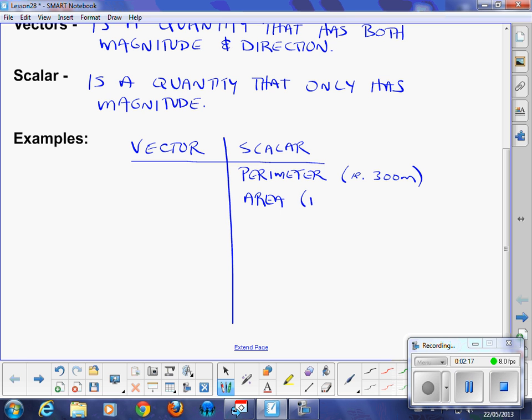You already have worked with scalars. I'm just now quantifying, putting them into categories for you. Area is another scalar. You'd say area is 300 square meters. You don't say 300 square meters up or down. You don't give it a direction.